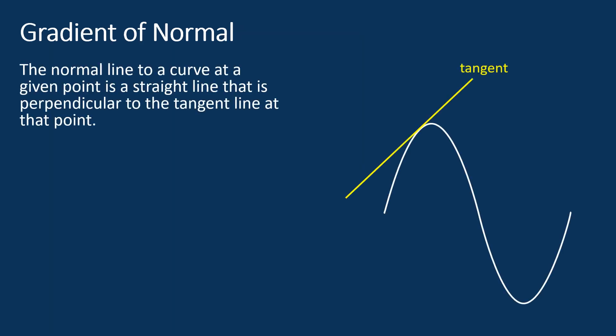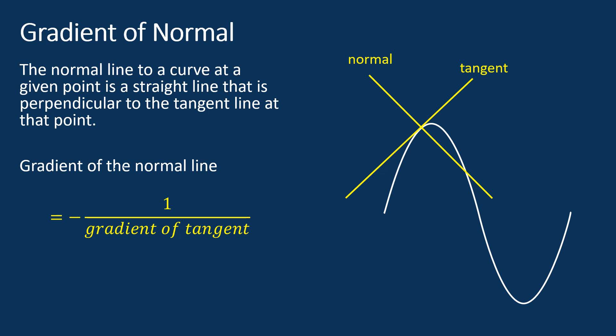Gradient of normal. The normal line to a curve at a given point is a straight line that is perpendicular to the tangent line at that point. The gradient of the normal line is the negative reciprocal of the gradient of the tangent line. We have just learned that the gradient of the tangent is equal to dy/dx, hence the gradient of the normal is equal to negative 1 over dy/dx.